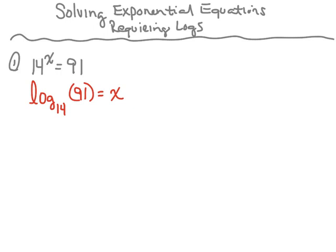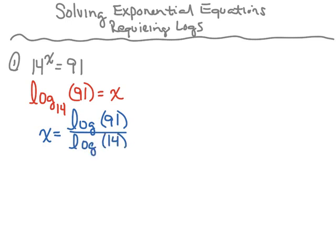The reason I'm writing it this way is so now I can use my change of base property. That change of base property says that log base 14 of 91 is equal to the log of 91 divided by the log of 14. So if I enter this into my calculator — the log of 91 divided by the log of 14 — I get approximately 1.71.